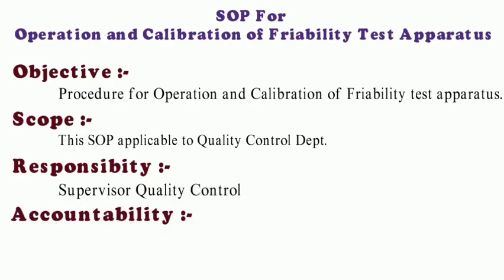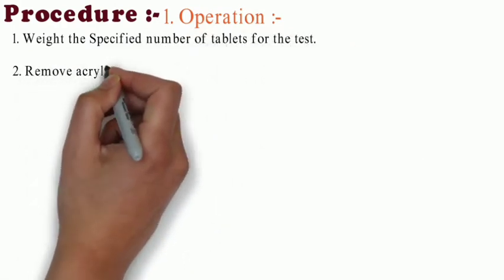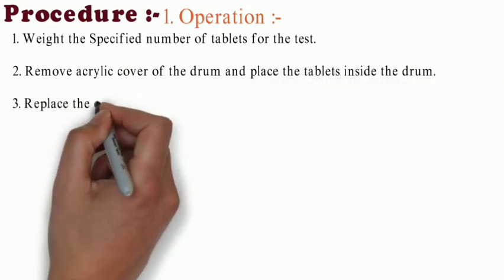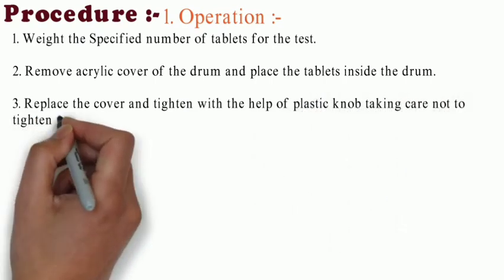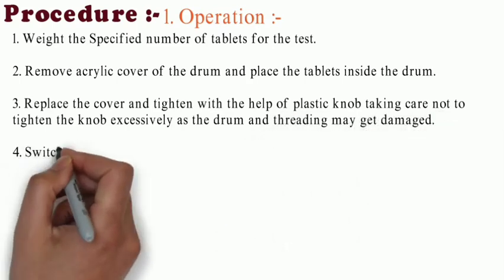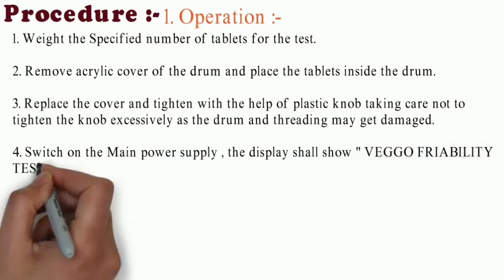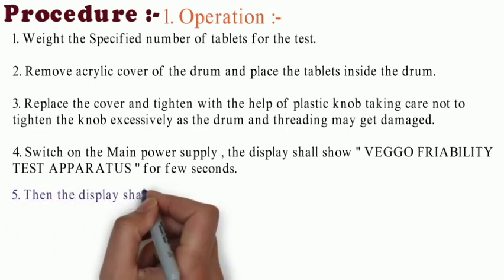Responsibility: supervisor of quality control department. Accountability: senior manager quality assurance. Procedure: First, operation. Weigh the specified number of tablets for the test. Remove the acrylic cover of drum and place the tablets inside the drum. Replace the cover and tighten with the help of plastic knob, taking care not to tighten the knob excessively as the drum and threading may get damaged.